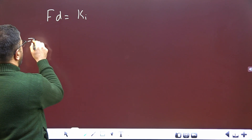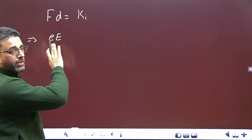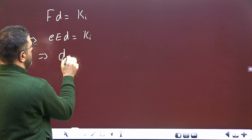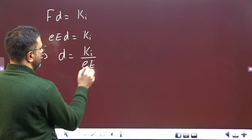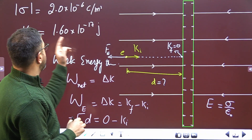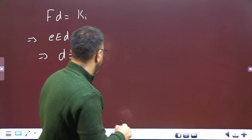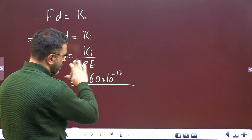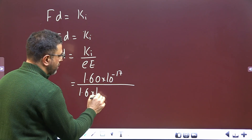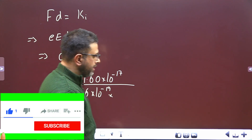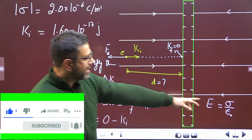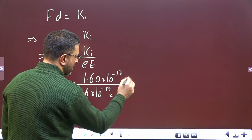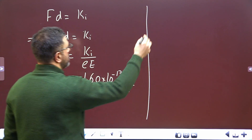Now F = eE (magnitude of the force), where E = σ/ε₀, so e·(σ/ε₀)·D = Kᵢ, which means D = Kᵢ / (e · σ/ε₀). Substituting values: Kᵢ = 1.60 × 10⁻¹⁷ J, charge of electron e = 1.6 × 10⁻¹⁹ C, and E = σ/ε₀.